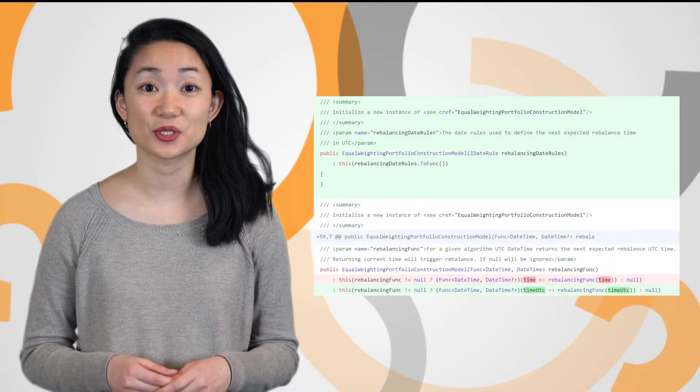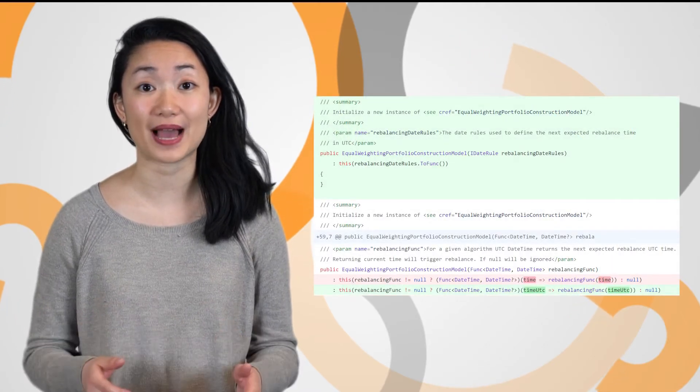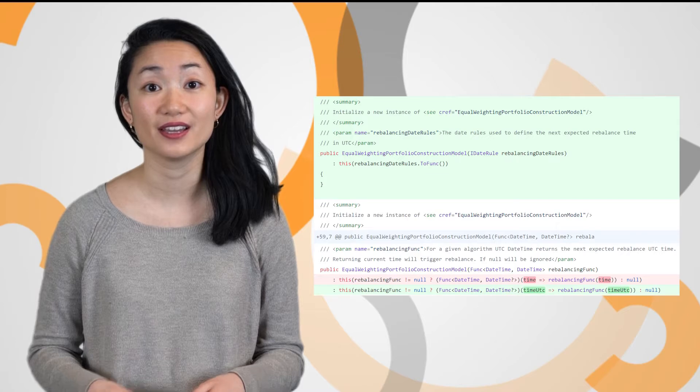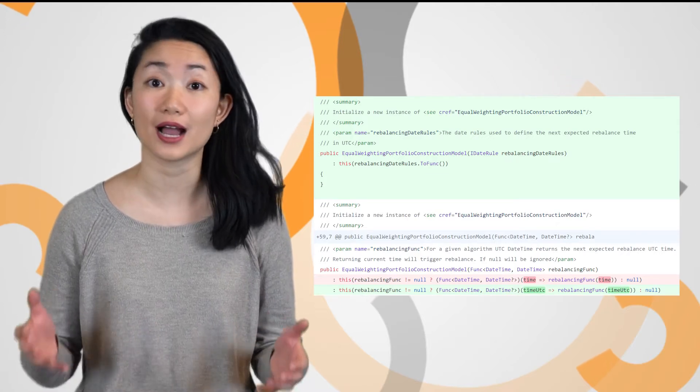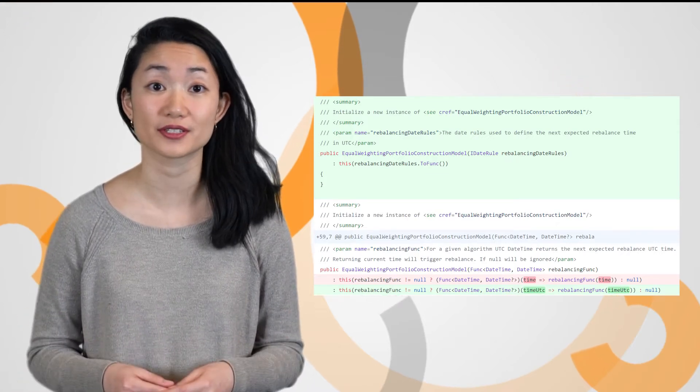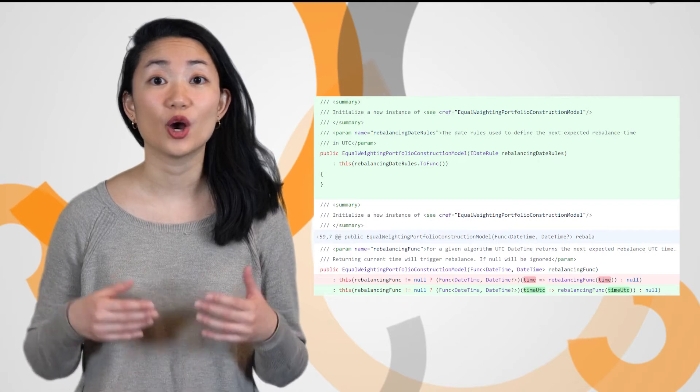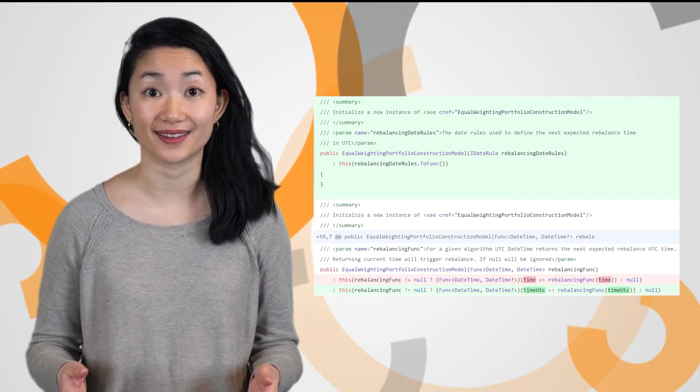We also worked hard to reduce portfolio churn by designing rebalancing to be triggered by a function. The new function supports all kinds of portfolio rebalancing triggers, including a time period or even monitoring for portfolio imbalances.